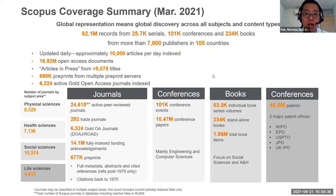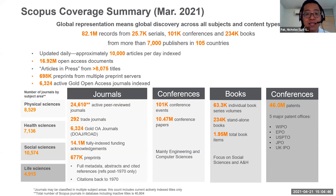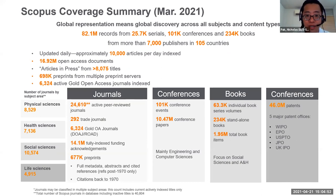This is our latest March Scopus coverage. I get a lot of questions from USM about which journals are currently updated and if citations are missing — something we address very actively. We index approximately 10,000 articles every single day from over 25,000 journals.